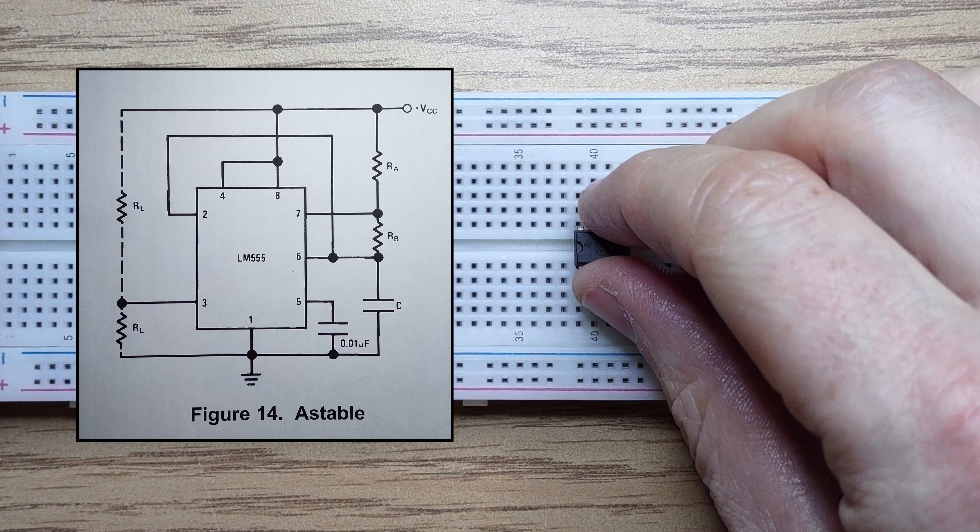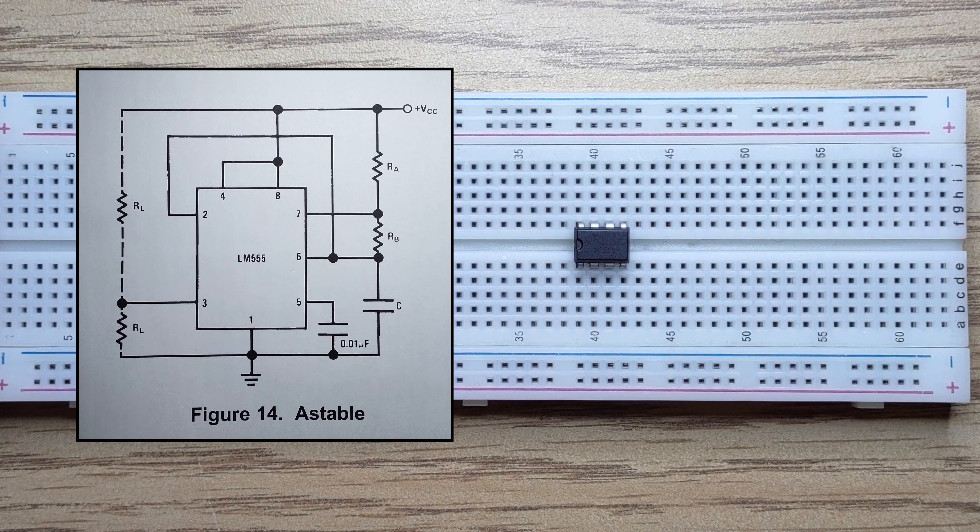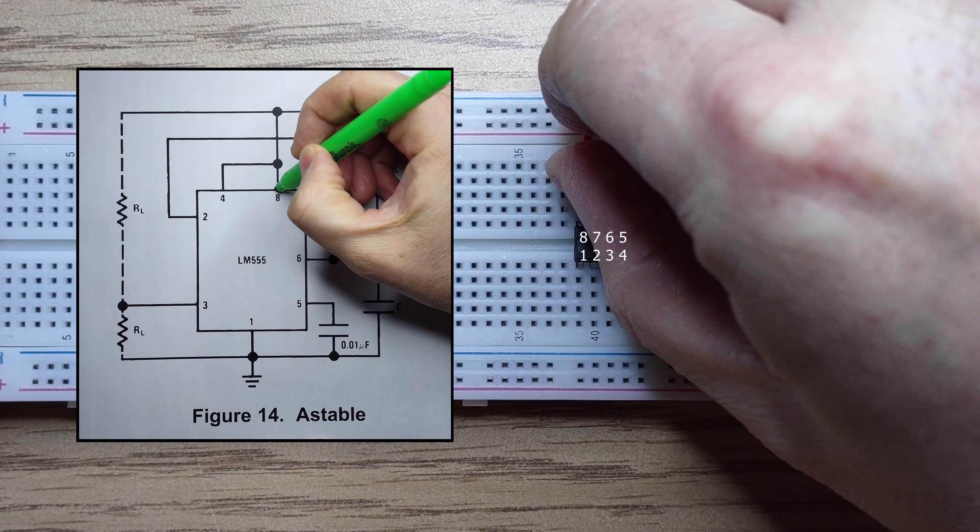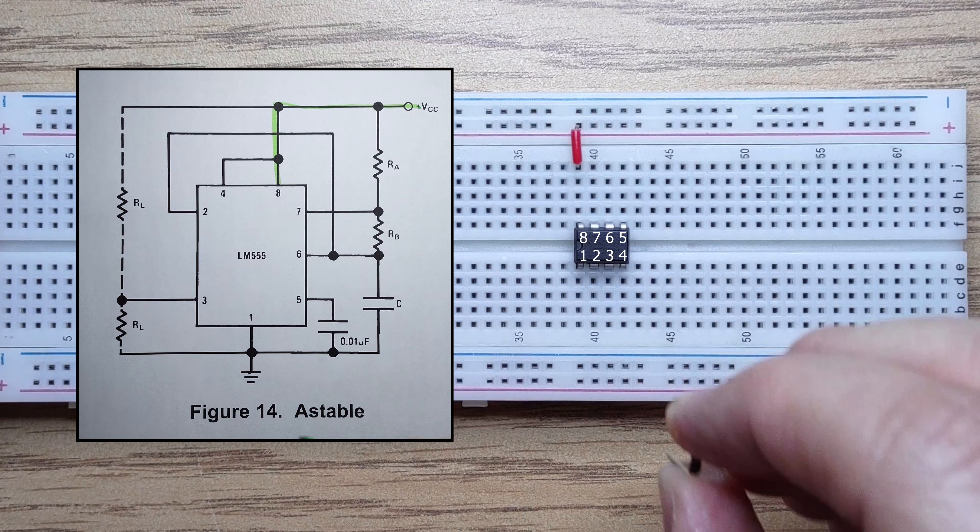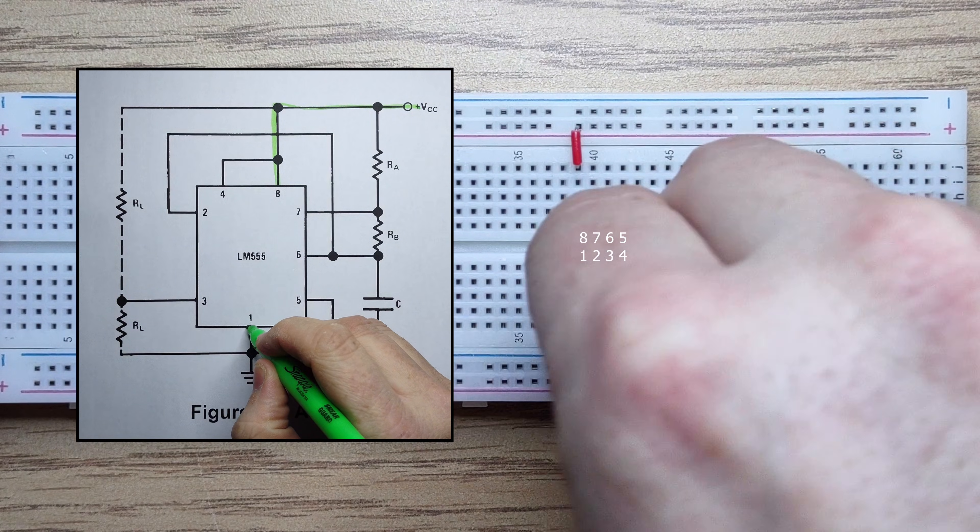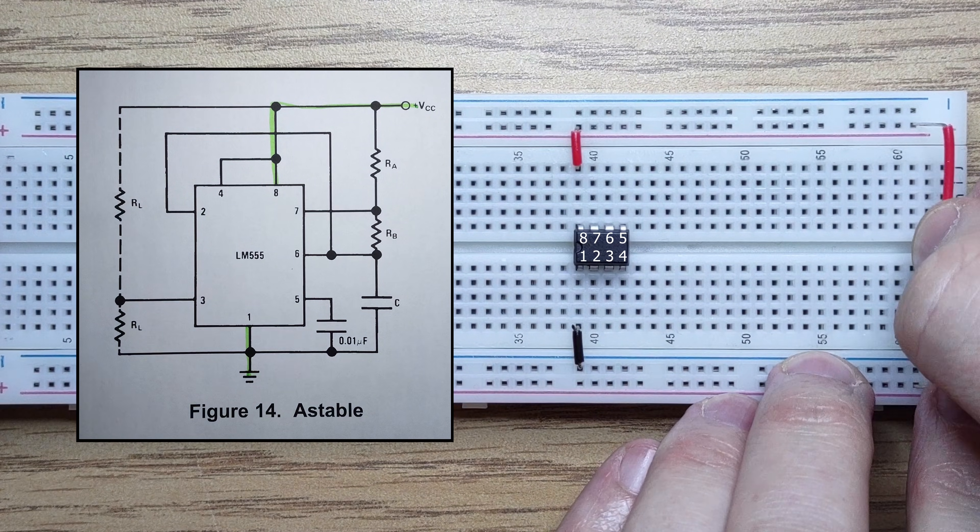Let's follow the astable wiring from the datasheet. First, the 555 timer. We'll connect VCC and ground. And remember to connect the power rails.